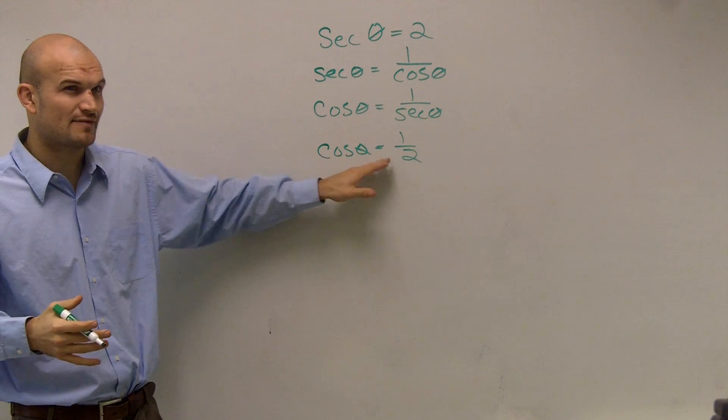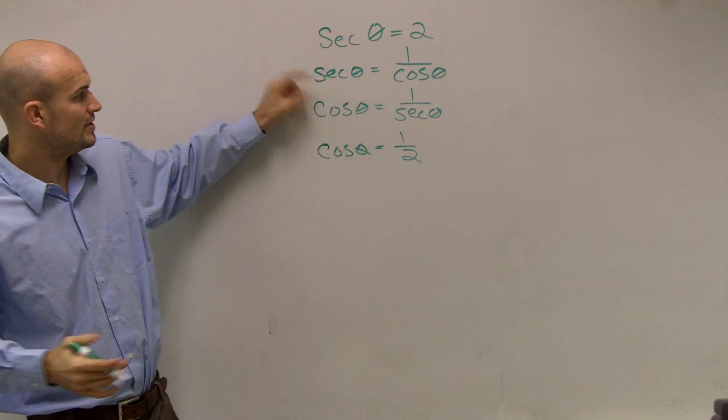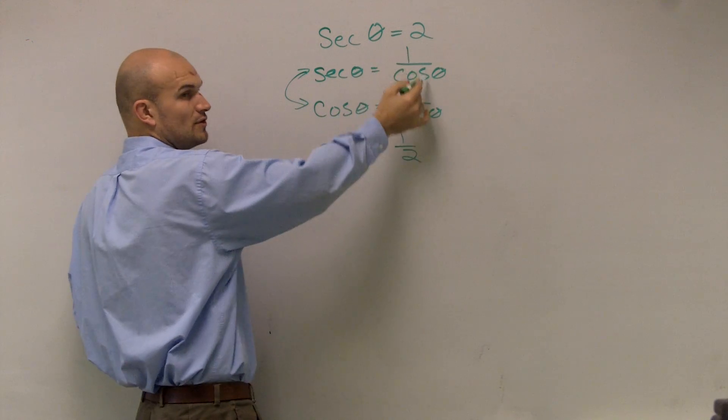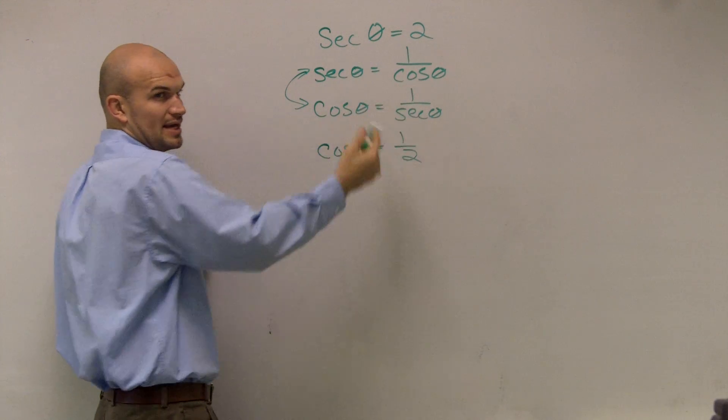Now this is something a little bit more manageable, cosine of 1/2. Do you see what I did? We know that these two are interchangeable. Secant is the reciprocal of cosine. Cosine is the reciprocal of secant.